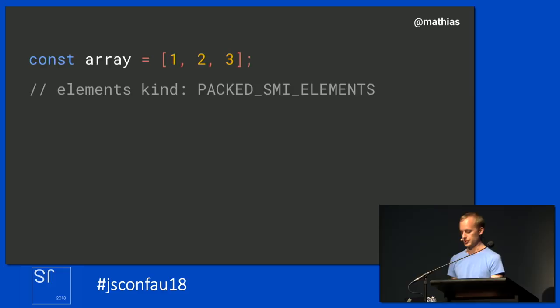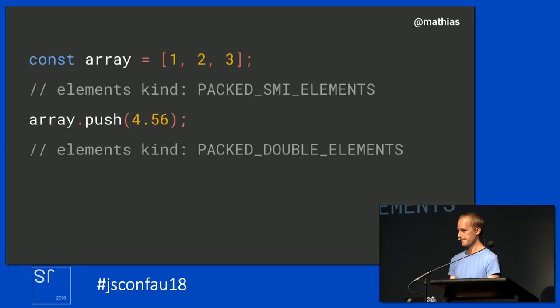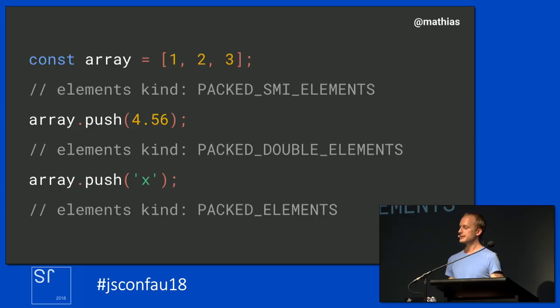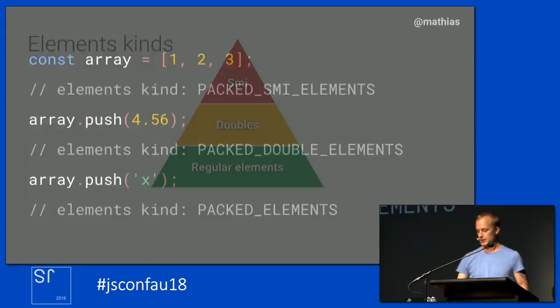Adding a floating point number to the same array transitions the elements kind to a more generic version: packed double elements. Adding a string literal changes the elements kind once again. V8 assigns an element kind to each array, and as we've seen, the elements kind is not set in stone — it can change at runtime. You can think of this as a pyramid, because the set of numbers representable as a SMI is a subset of those representable as a double, and the same goes for doubles versus regular elements. Importantly, these element kind transitions can only occur in one direction — from specific to more general. You can never go back up.